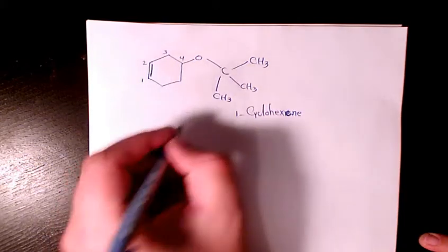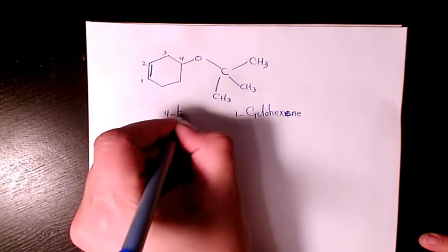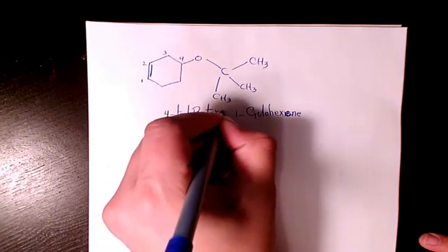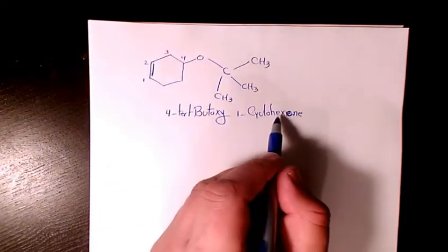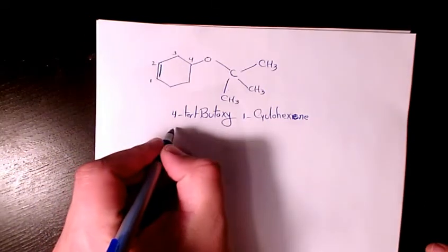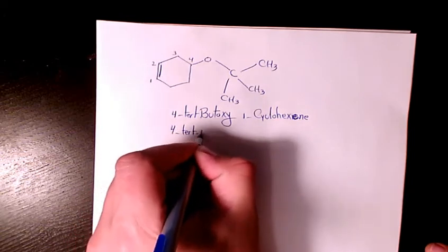Tertiary butoxy. So because it's connected to the number four, it's going to be 4-tert-butoxy-1-cyclohexene. You can also say that's going to be 4-tert-butyl cyclohex-1-ene.